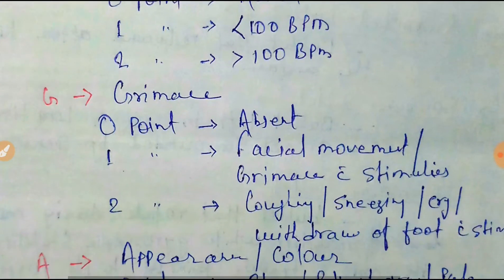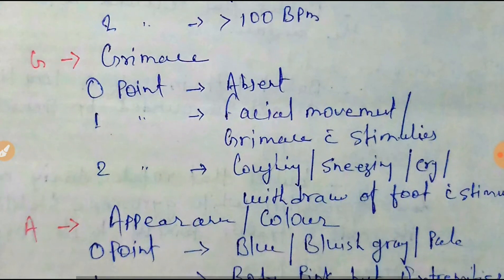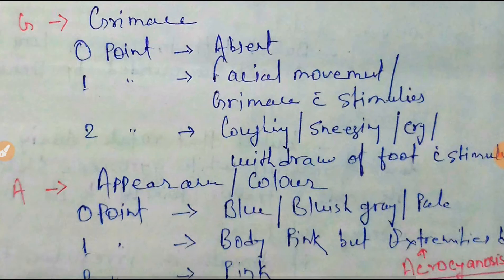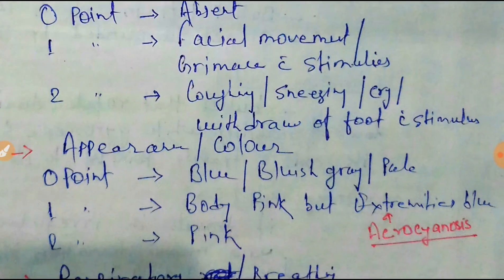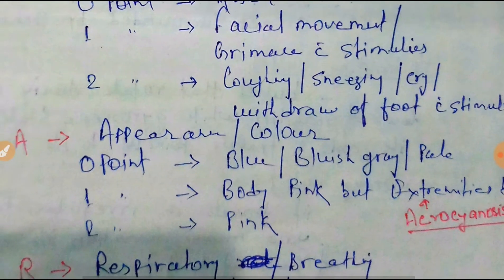G indicates Grimace, meaning reflex irritability. 0 points indicates absent response, 1 point indicates facial movement or grimace with stimulus, and 2 points indicates coughing, sneezing, crying, or withdrawal of foot with stimulus.